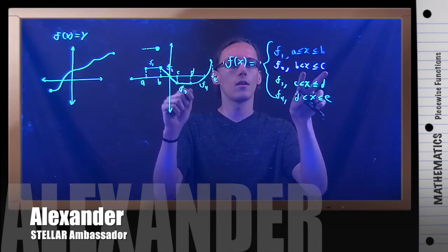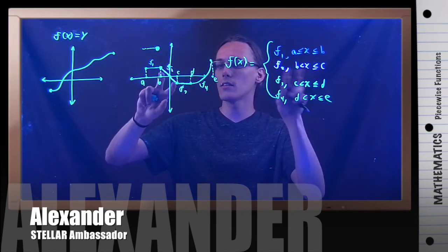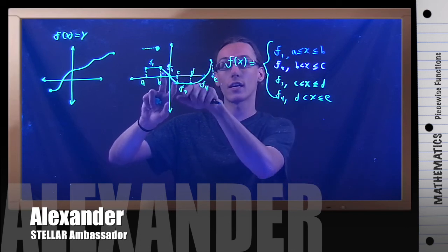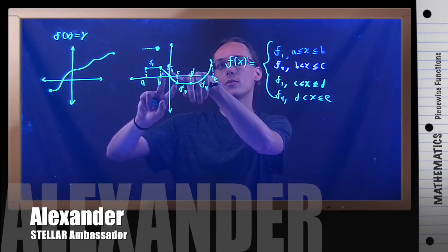Whenever x is between B and C, this looks like it would be something like y equals negative x. So use that to graph, but only do it in here.